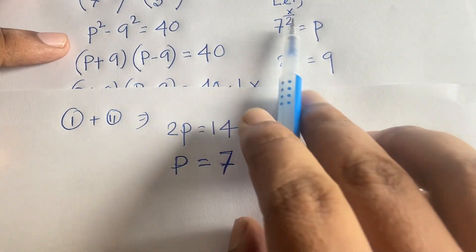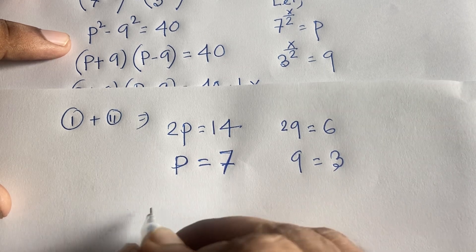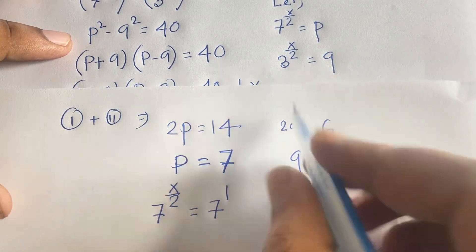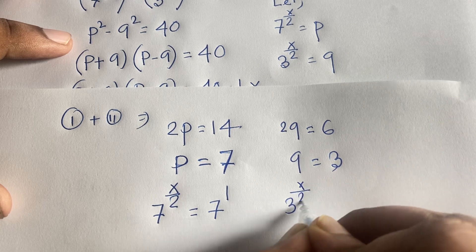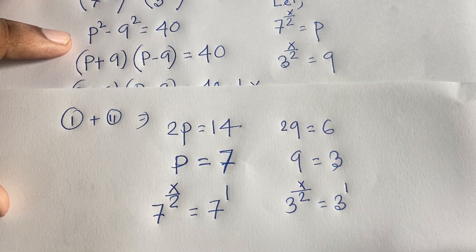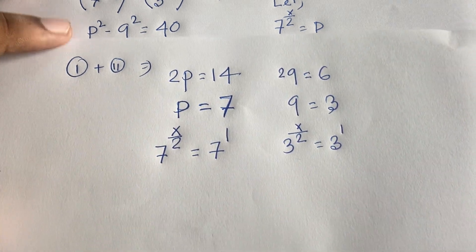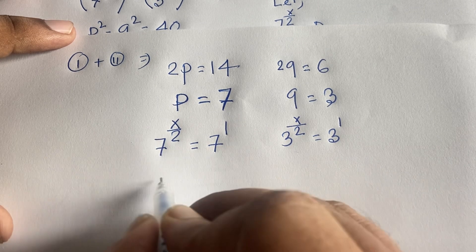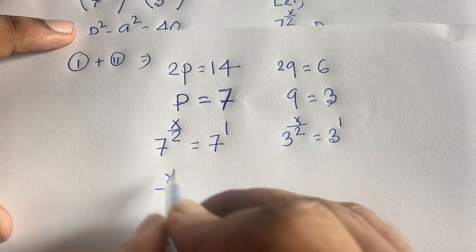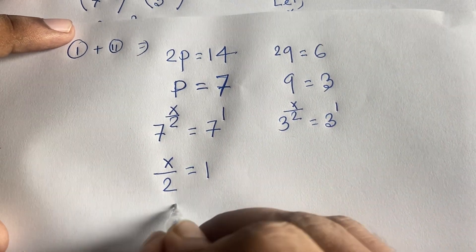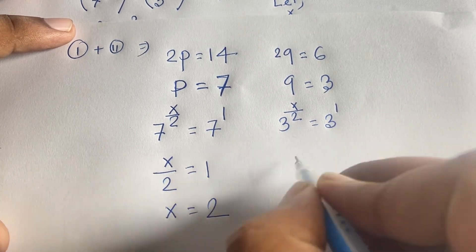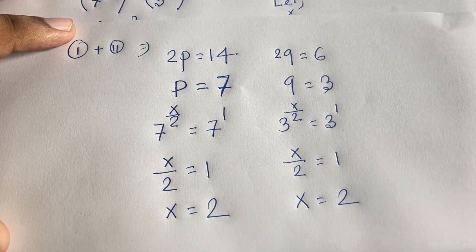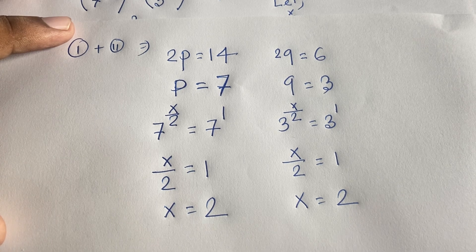Recalling that p = 7^(x/2), we have 7^(x/2) = 7^1, so x/2 = 1, giving x = 2. Similarly, q = 3^(x/2) = 3^1 confirms x/2 = 1 and x = 2.